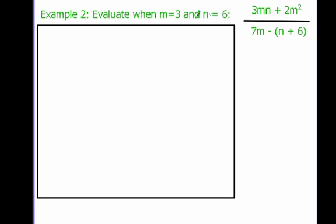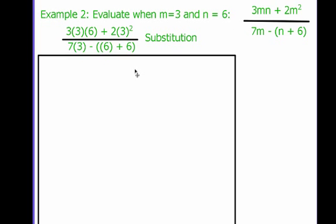It says evaluate when m is 3 and n is 6. I've got 3 times m times n plus 2 times m squared, all divided by 7 times m minus the quantity n plus 6. Just like before, our first step is substitution.